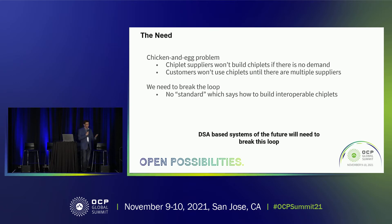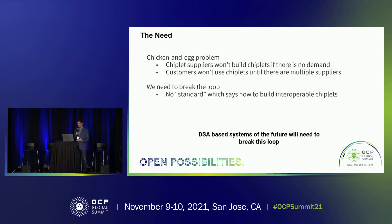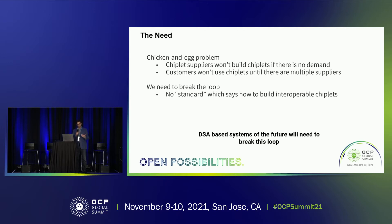So where does this need arise? I view it as a chicken-and-egg problem. Chiplet suppliers won't build chiplets until they see demand, and customers like us won't use chiplets until there are multiple suppliers — we can't afford to be with one supplier. We need to break this loop. Domain-specific architectures and systems will need to break this loop. So how do we build a standard to enable interoperable chiplets? That's the basic question we have been working on at Google.